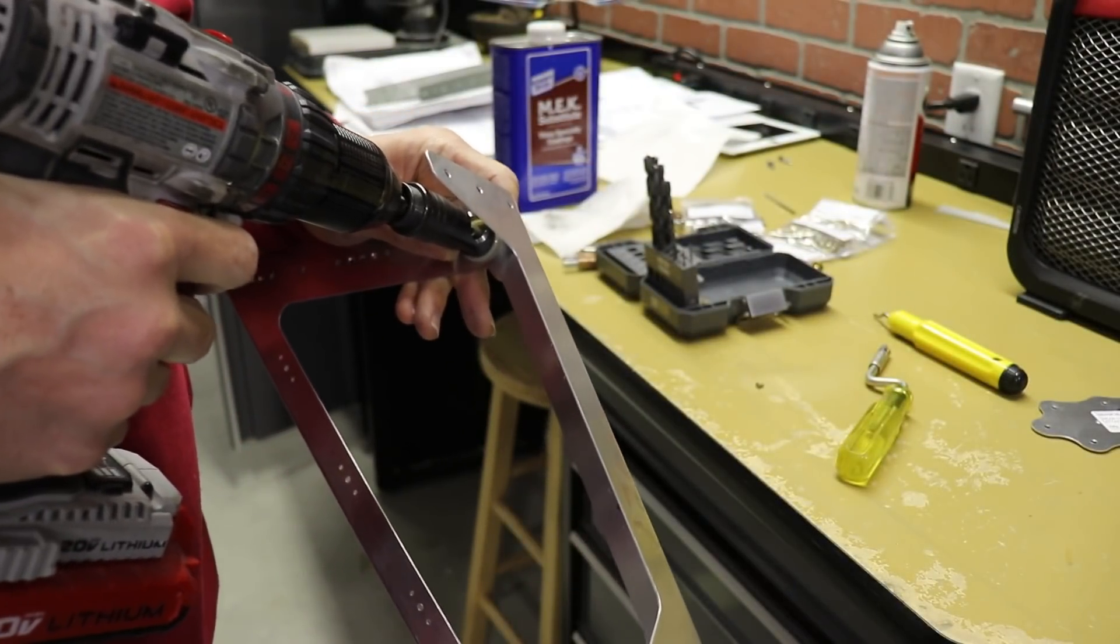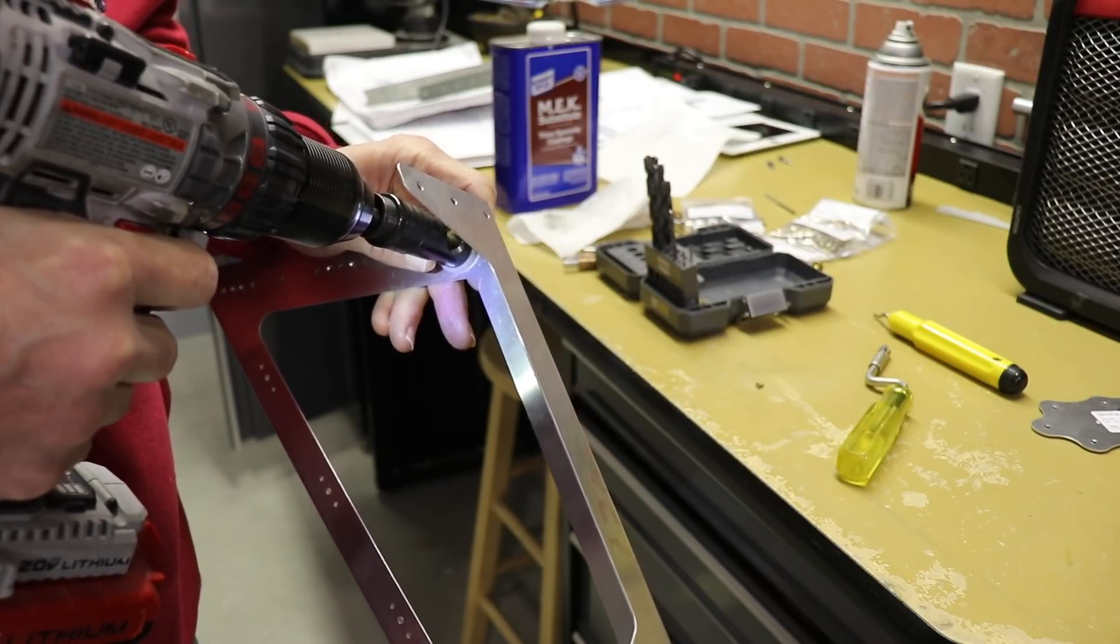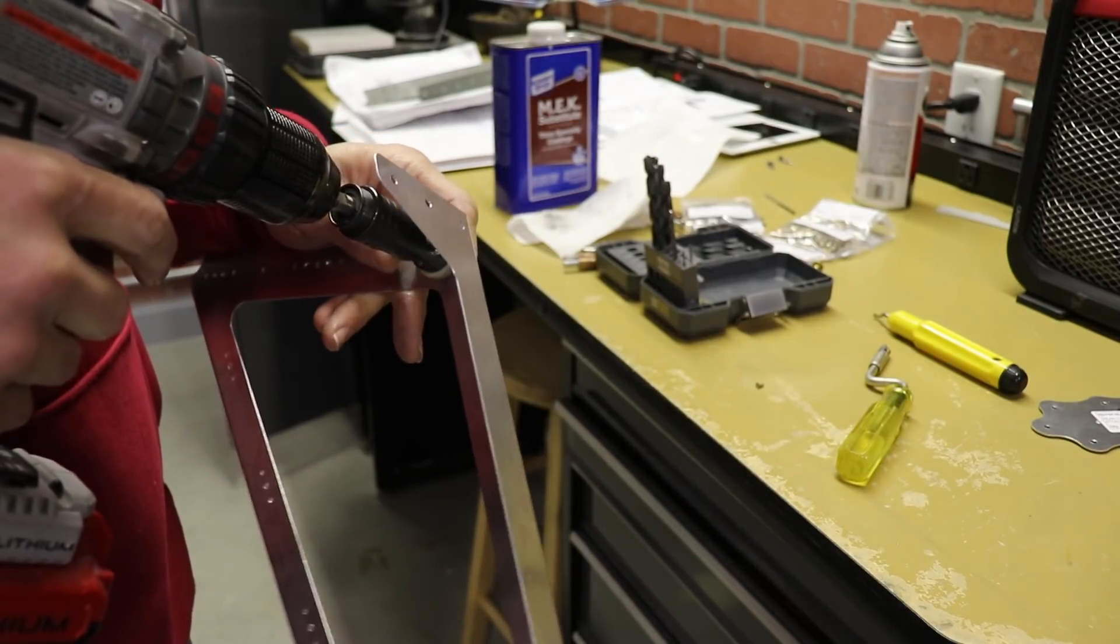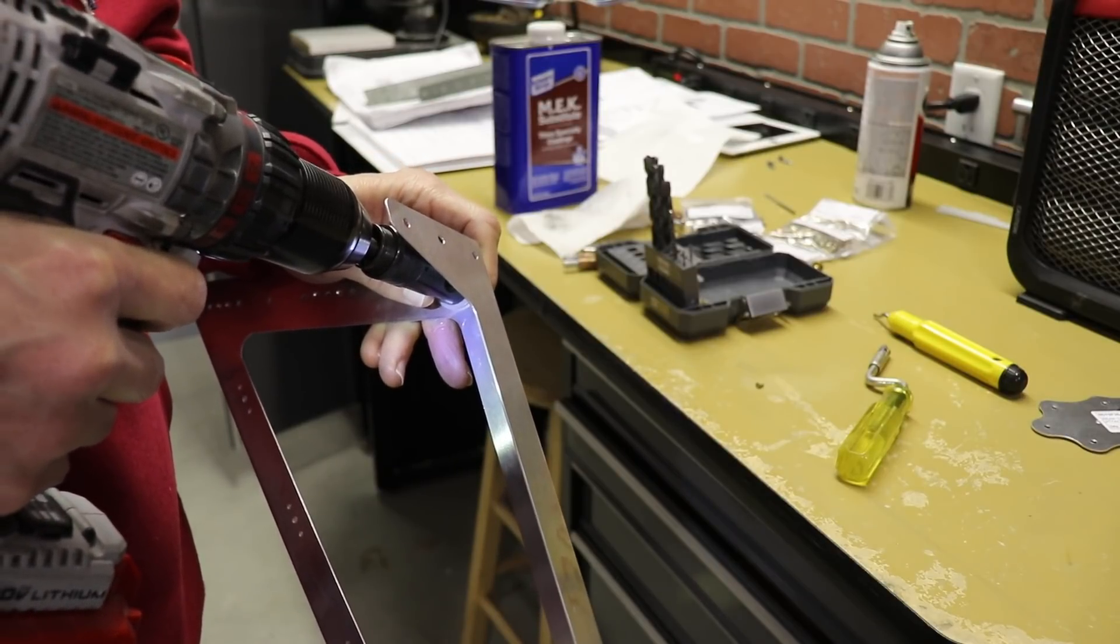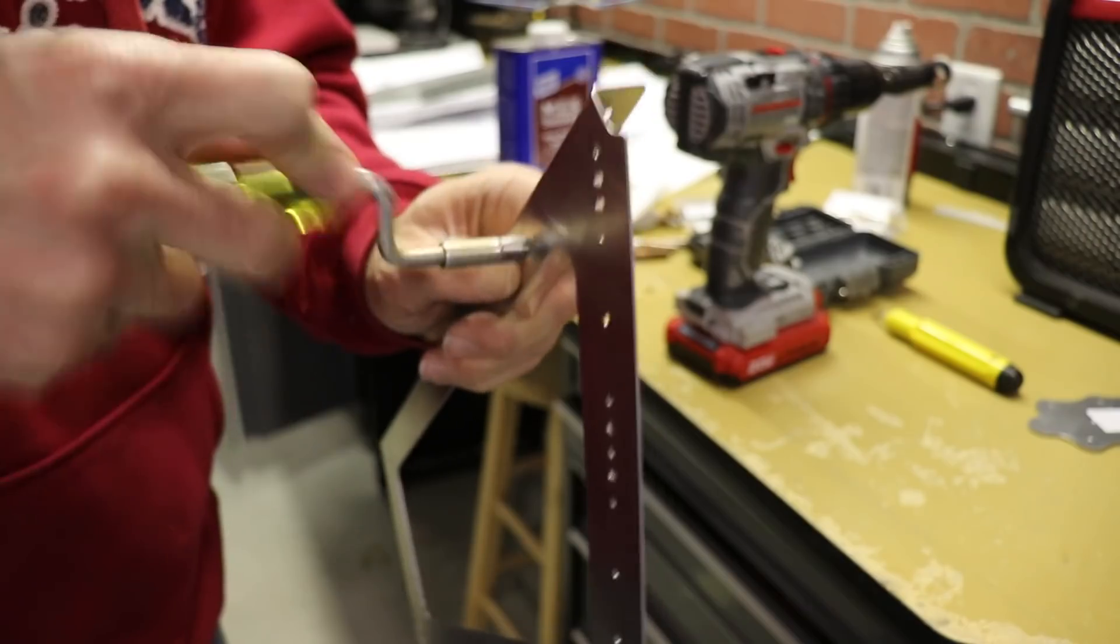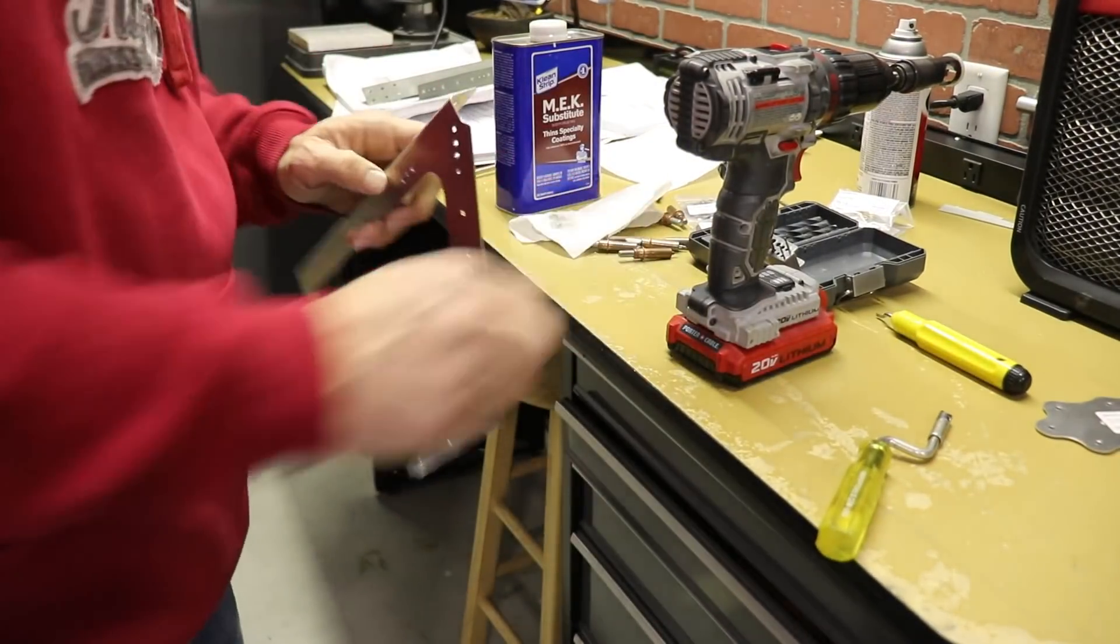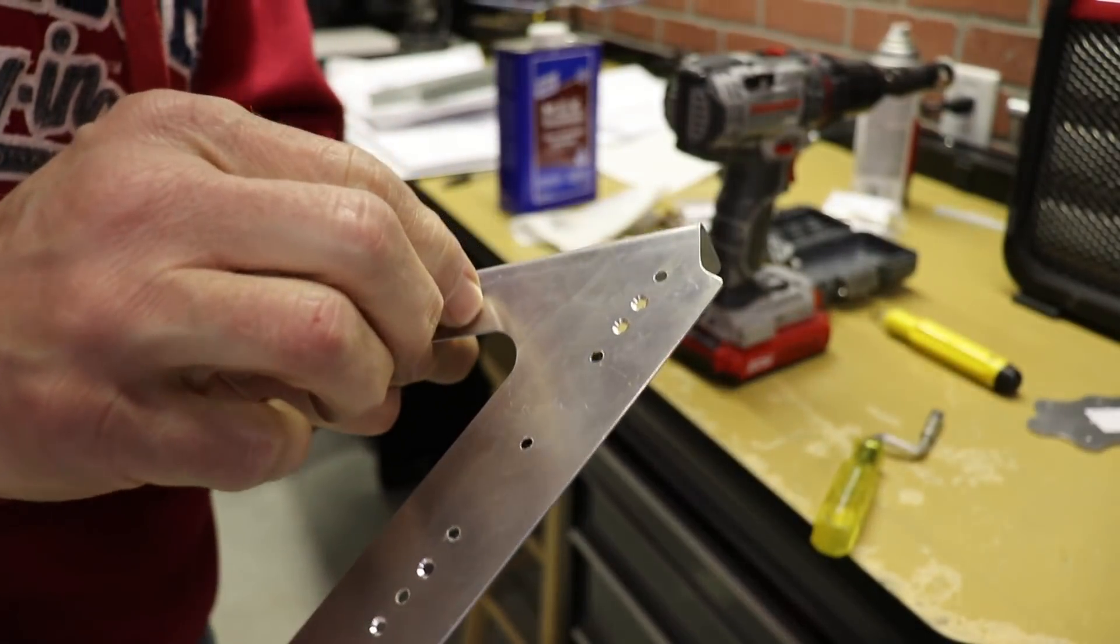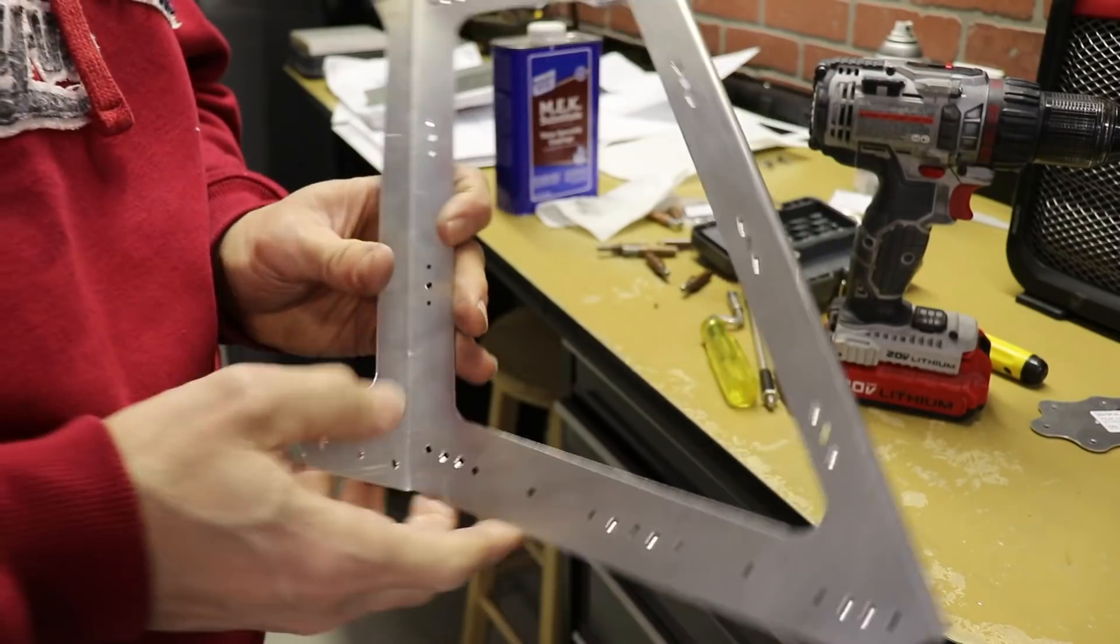The first thing I'm doing is using this countersinking tool in my drill to countersink the holes for the nut plates that will get riveted to this piece. Sometimes this countersinking tool can leave a little bit of a jagged edge, so I use the deburring tool to clean up the edge. And then with each hole, I put in a rivet to make sure that it is countersunk far enough.